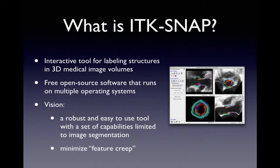So, what's ITK-SNAP? It's an interactive tool for labeling various structures in 3D medical image volumes, both anatomical structures and pathological structures. It's free, it's open source, and it runs on three different operating systems: Linux, macOS, and Windows. Our primary vision was to create a tool that's easy to use for people who are not graduate students in the computer science department.